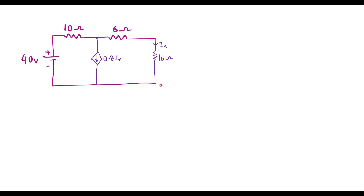This is the given circuit. We need to calculate the current through the 16 ohm resistor using Thevenin's theorem. This circuit consists of an independent source of 40 volts and a dependent source — a current dependent current source. If the circuit consists of dependent sources, we need to calculate three parameters: Thevenin's voltage Vth, short circuit current ISC, and Thevenin's resistance Rth.